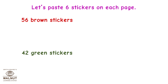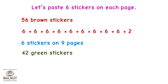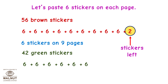Let's paste 6 stickers on each page. For brown stickers, we divide 56 by 6 and get 9 — that is 6 stickers on 9 pages, but we are left with 2 stickers. For green stickers, we divide 42 by 6 and get 7 — that is 6 stickers on 7 pages with no stickers left. But we have 2 brown stickers left, so we cannot paste 6 stickers on each page.